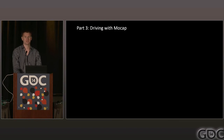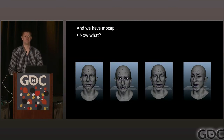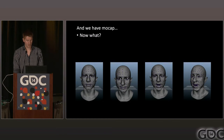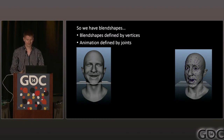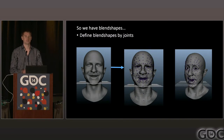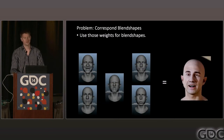To recap, we have all these blend shapes — FAC 24, 33, compress, smile, surprise, etc. — and a bunch of frames of animation. You call the motion capture studio, give them your joint rig, they solve it, and you get joint data. The problem is that blend shapes are defined by vertex movements whereas animation is defined by joint movements — we need to put these into the same space. The easiest way is to figure out the joint movement that best corresponds to each individual blend shape. Given these joint shapes, we find the weights that match the actual animation, then reuse those weights applied to the original blend shapes.